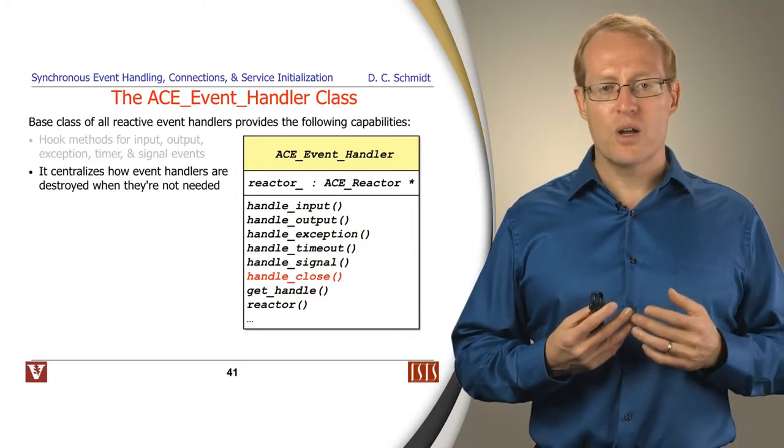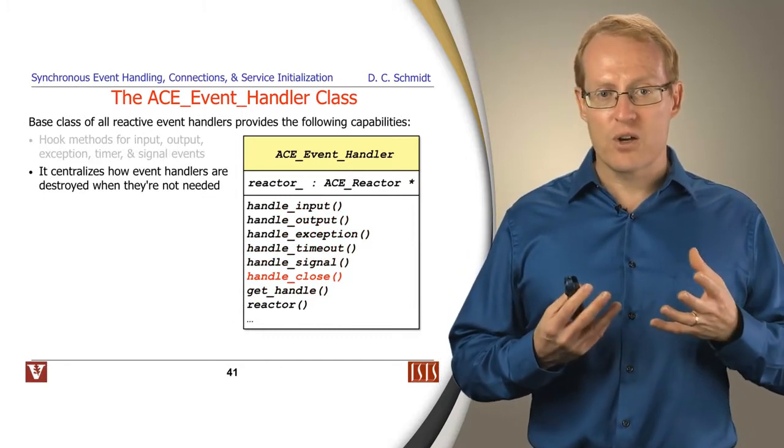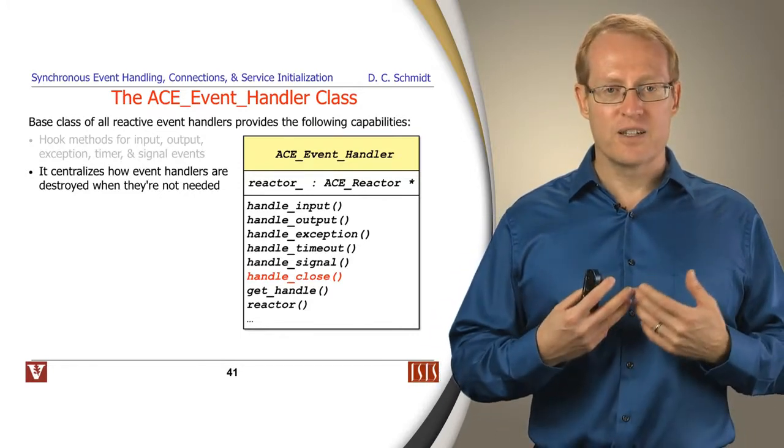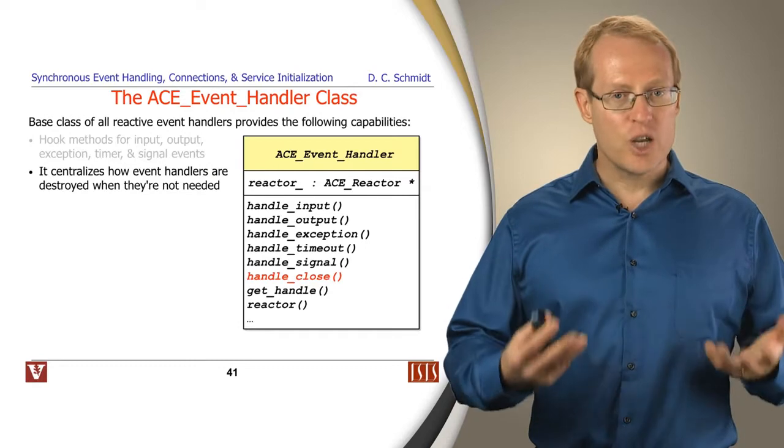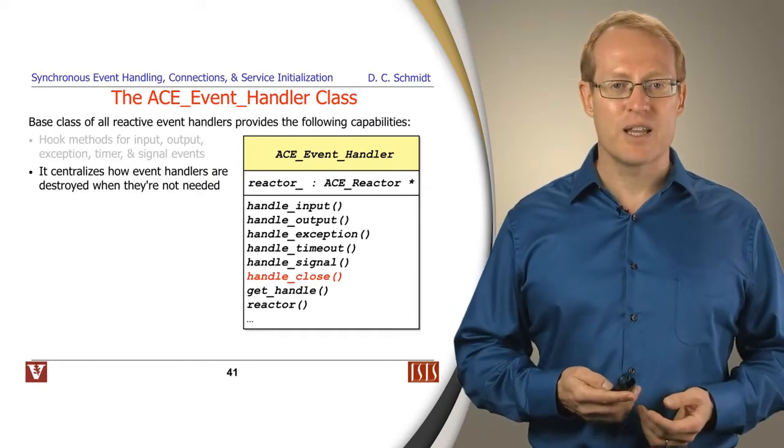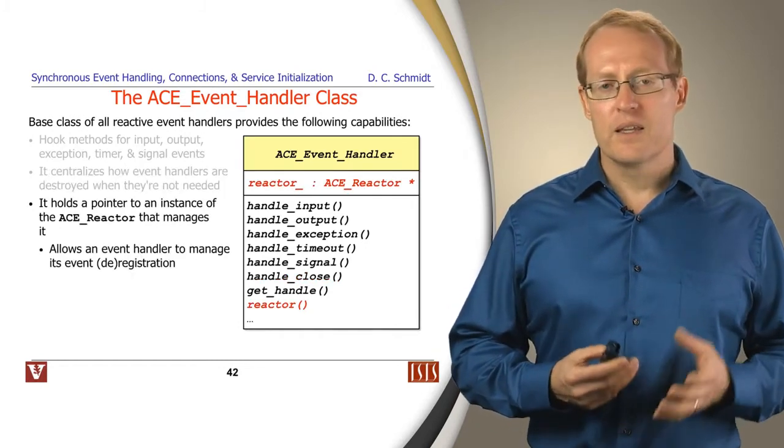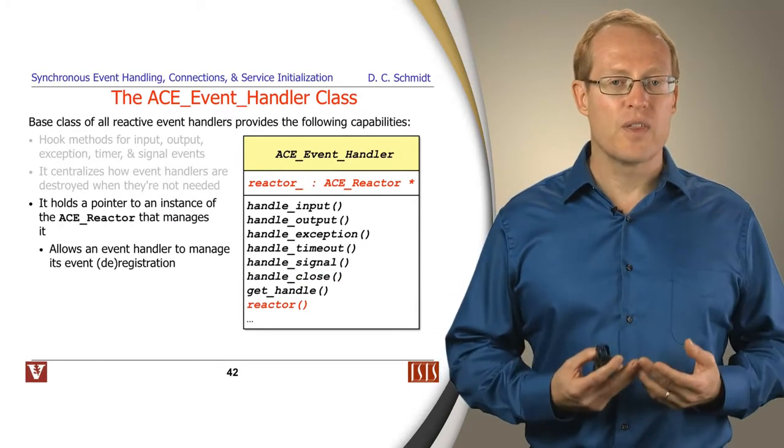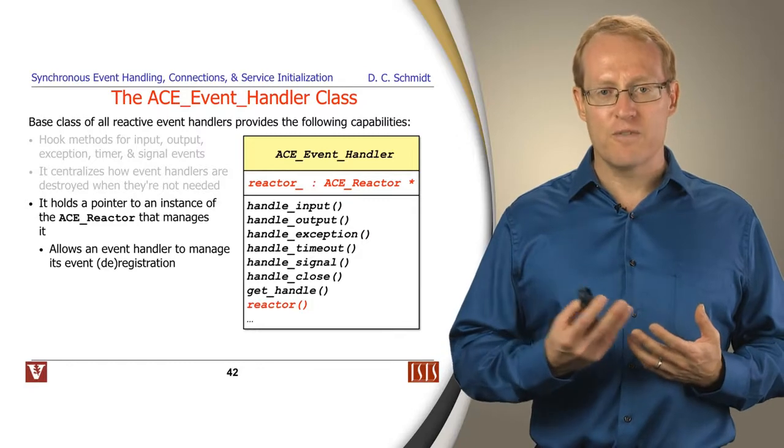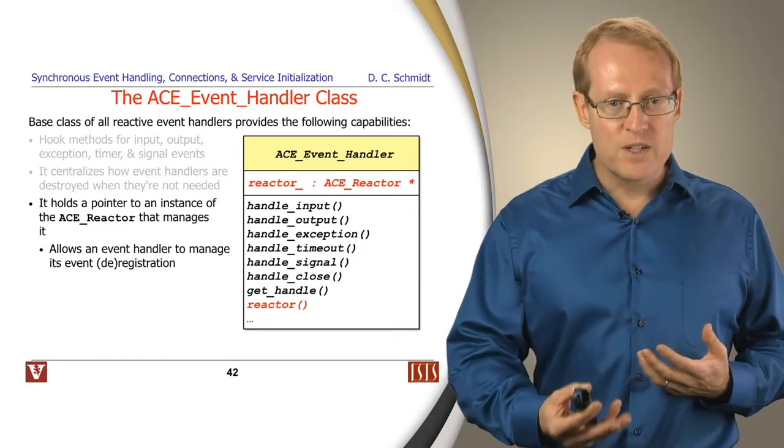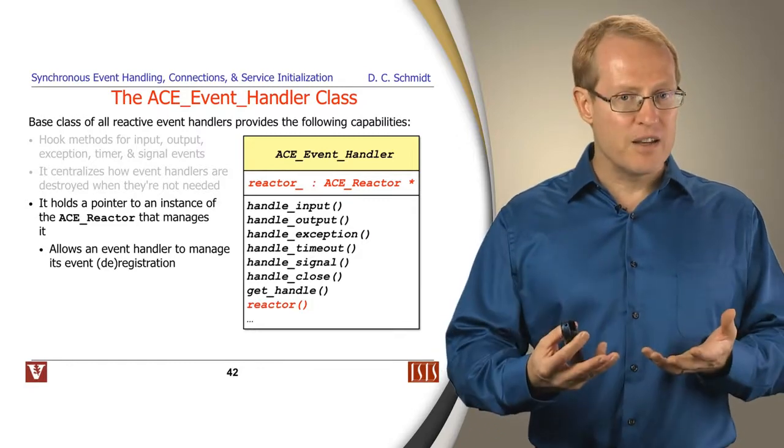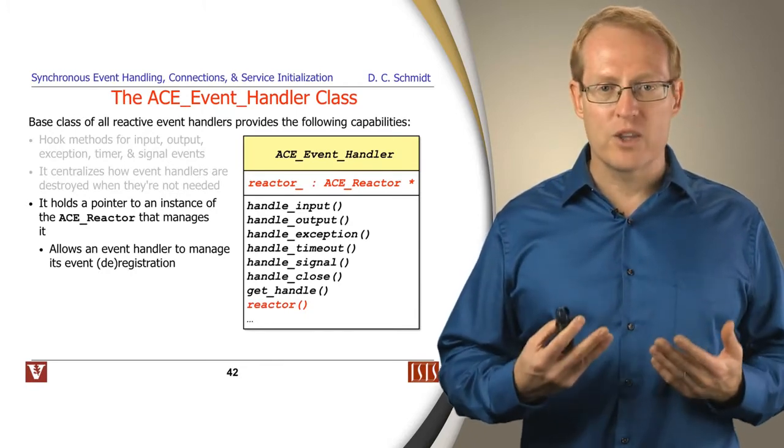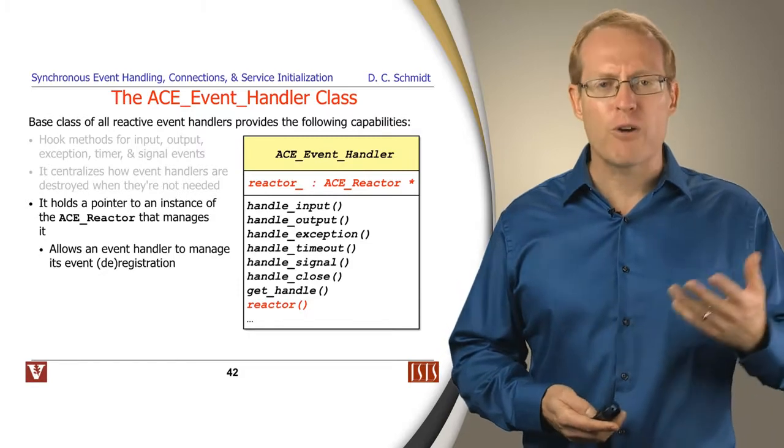This particular approach also centralizes how event handlers are cleaned up when they're no longer going to be needed. We have a handle close method that you will fill in to delete the object or shut down any resources it allocated dynamically when it closes down. The event handler also contains a pointer to the reactor it's associated with. And that makes it easier for an event handler to figure out how to remove itself, how to update its event registration masks that we'll talk about shortly, and basically keep charge of its lifecycle by knowing the reactor it's associated with. It's kind of a parent pointer, if you will.